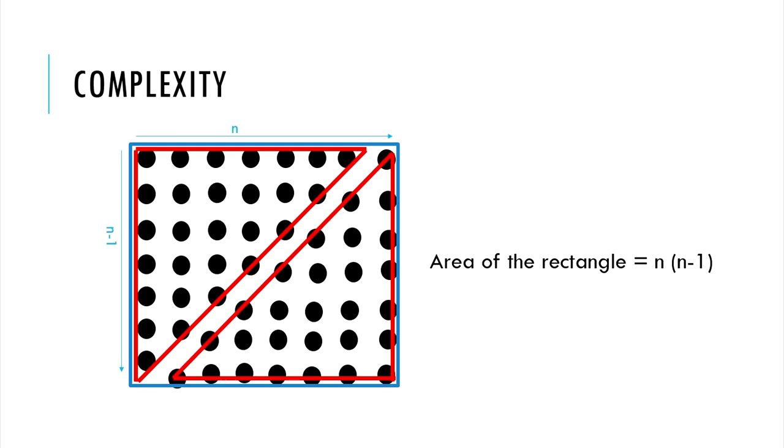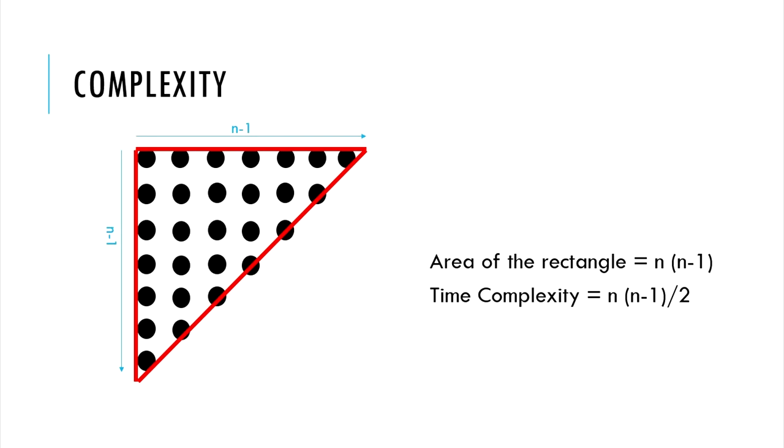Thus, the number of dots in our triangle is half the number of dots in this rectangle, that is n times n-1 divided by 2. This means that for an array with n elements, we will iterate n times n-1 divided by 2 times. Asymptotically, this complexity is in the order of n-square.